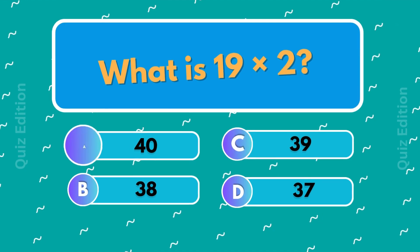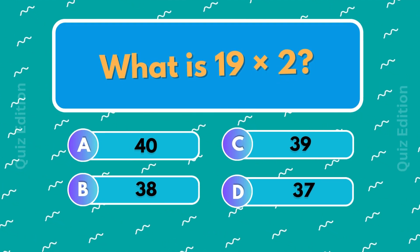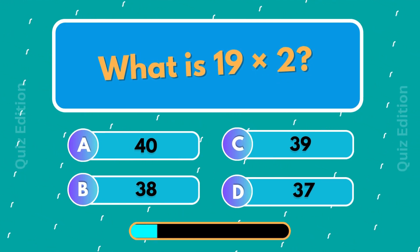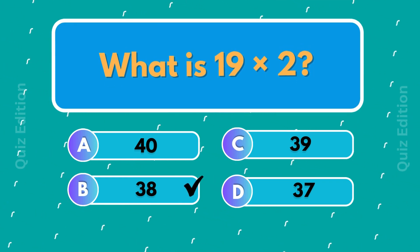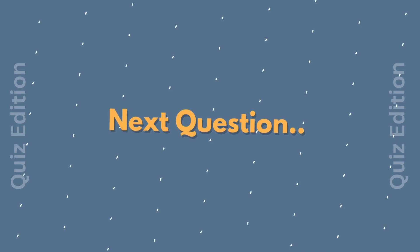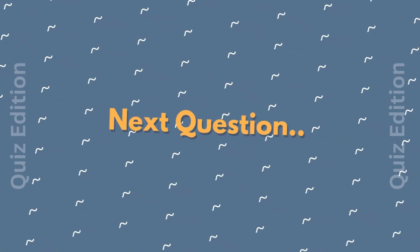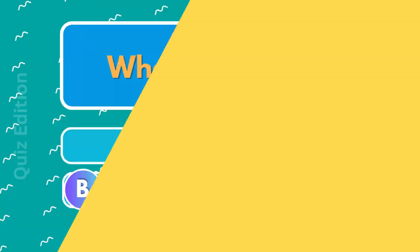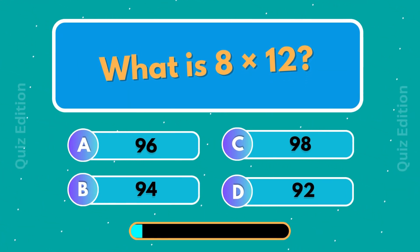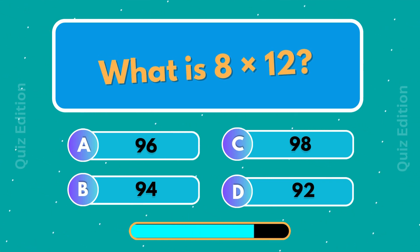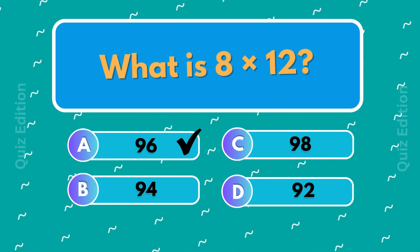What is 19 times 2? 38. What is 8 times 12? 96.